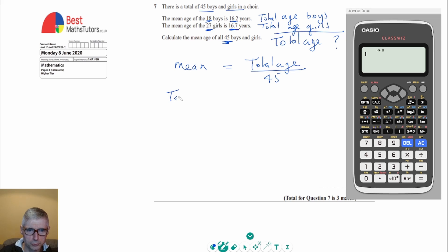In order to find the total age for the boys, we can say the total is going to be equal to the number of boys times by the mean. So we can use this formula for both the boys and the girls.